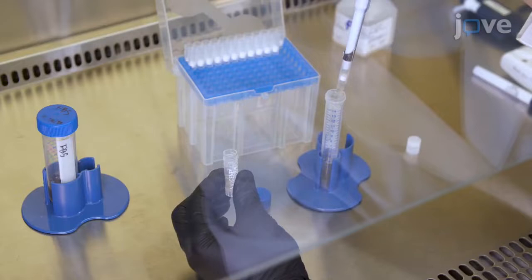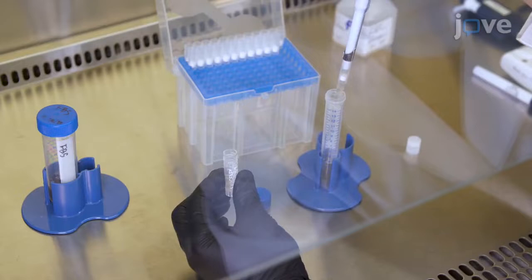Gently pipette to resuspend the sample and transfer the whole volume dropwise into a conical tube containing 2 milliliters of pre-warmed FBS.